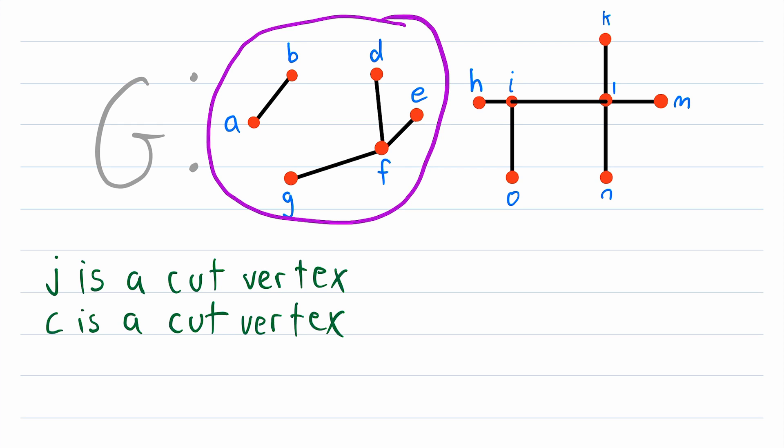So in this case, we see how deleting the vertex C disconnects this component. Thus, we've now created more components than we originally had. And that's what makes C a cut vertex.